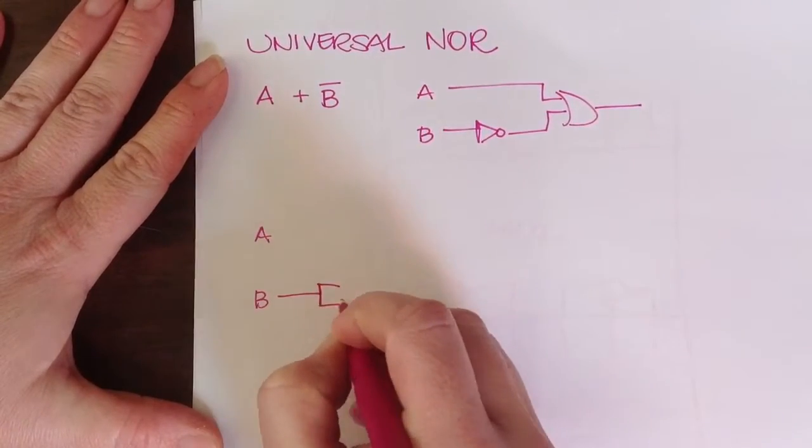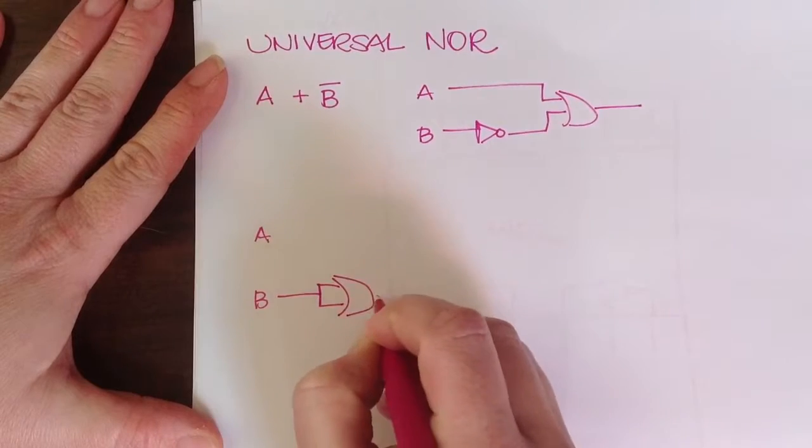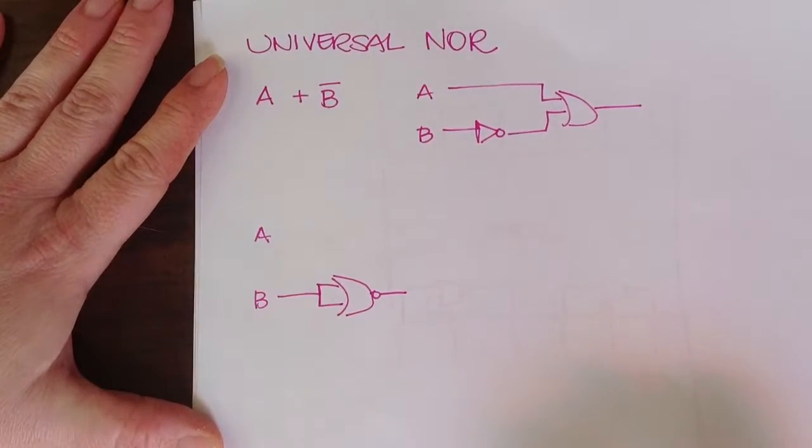I just take a NOR gate, feed B into both sides of that. And that makes NOT B.